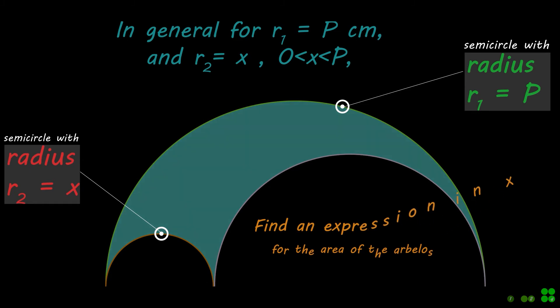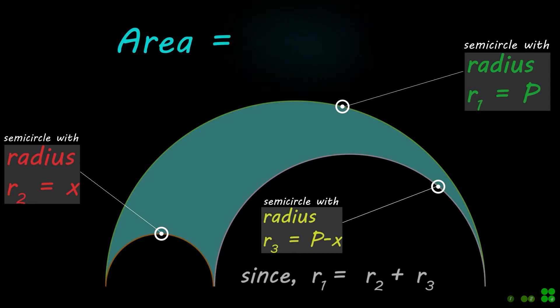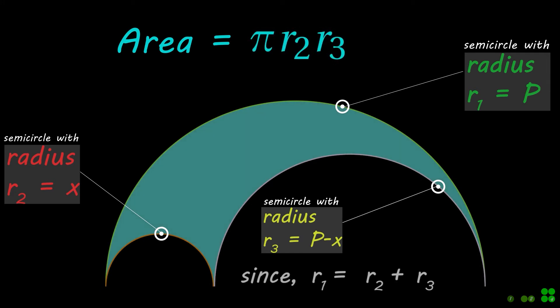Since R1 is equal to sum of R2 and R3, therefore R3 is equal to R1 minus R2. Now substitute these values in the equation for the area of the Arbelos and simplify.